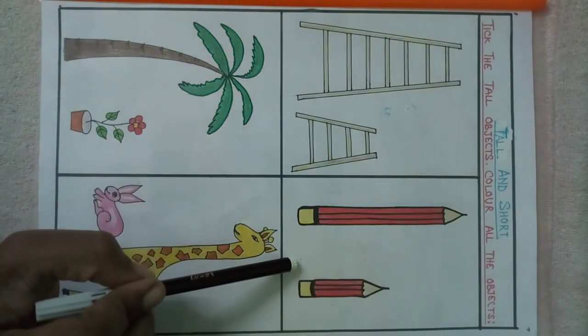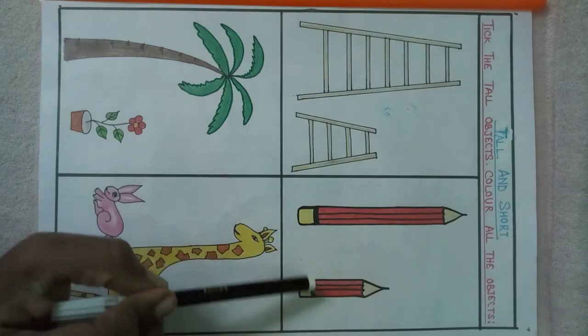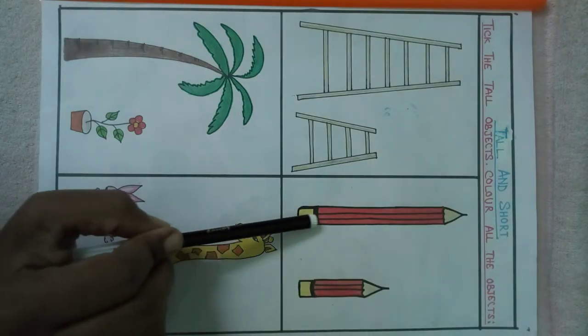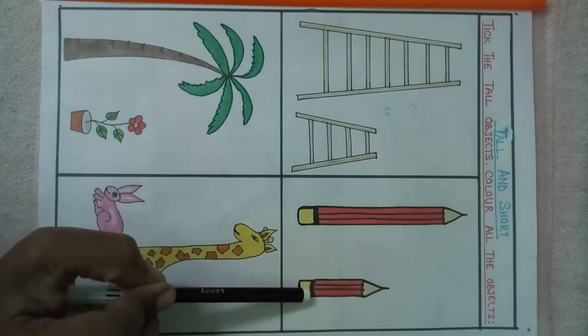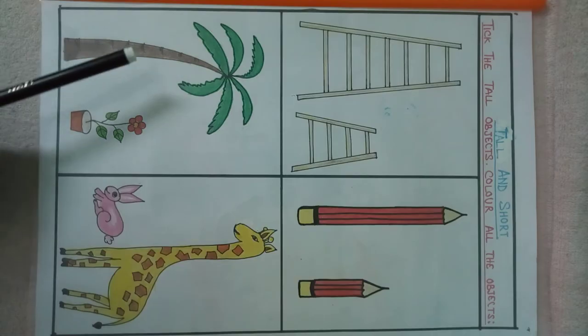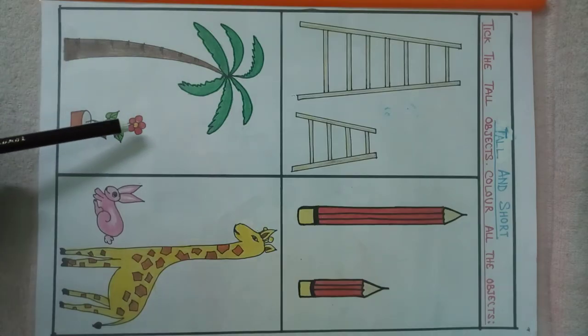Come to my next picture. Here you can see two pencils are drawn. This one is a tall pencil. This one is a short pencil. Now look at this picture. Here you can see two plants are present.